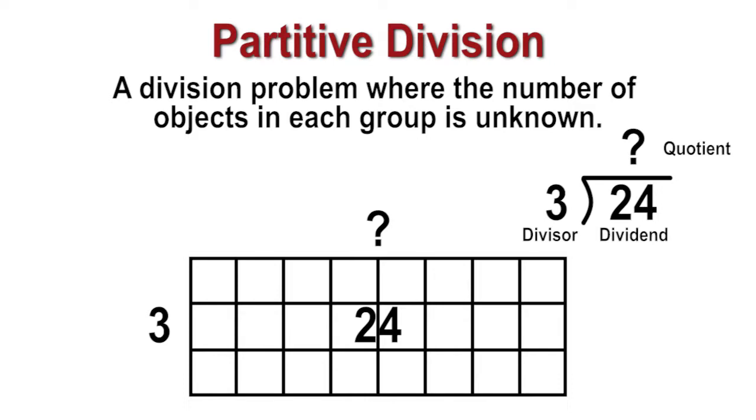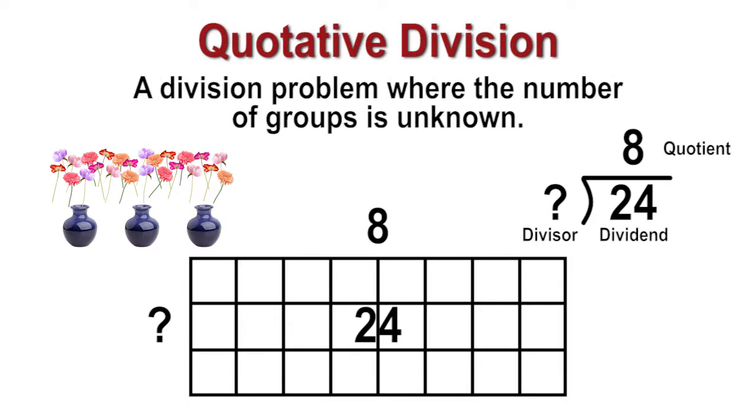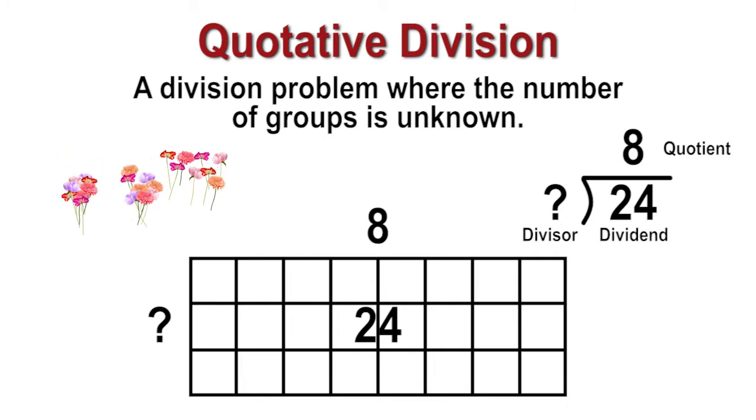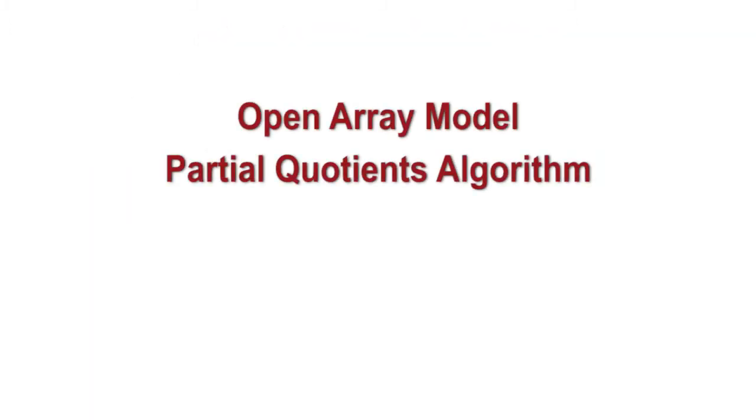Partitive models are those in which the number of groups is known, but the size of each group is unknown. The following word problem is an illustration of this model: There are 24 flowers to be divided into 3 vases. How many flowers will be in each vase? Quotative models are those in which the size of each group is known, but the number of groups is unknown. There are 24 flowers to be divided into vases with 8 flowers in each vase. How many vases are needed?